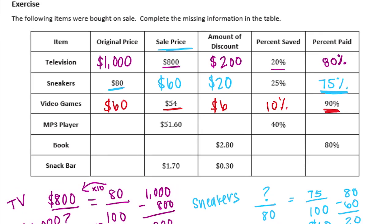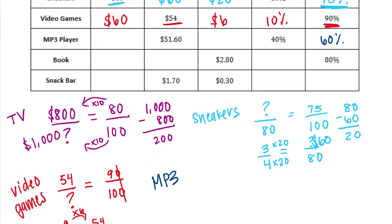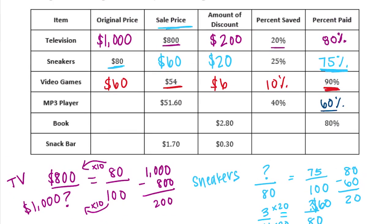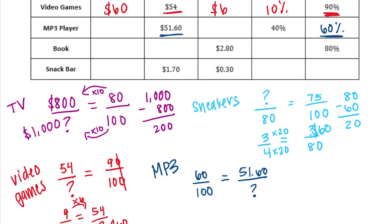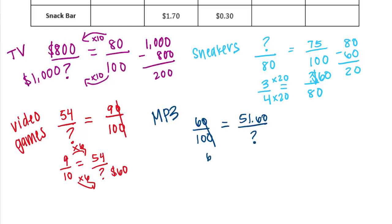For the MP3 player: the sale price is $51.60, and they saved 40%, which means they paid 60%. So $51.60 relates to 60%: 60 out of 100 equals $51.60 out of the unknown original price. Since this involves decimals, I'll simplify to 6/10.